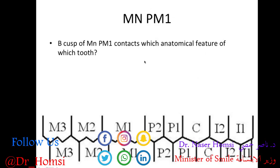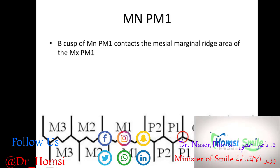Mandibular first premolar — the buccal cusp of the mandibular first premolar contacts which anatomical feature of which tooth? It's going to be contacting the mesial marginal ridge of the maxillary first premolar. We could also say the distal marginal ridge of the canine.